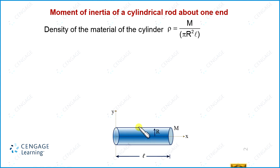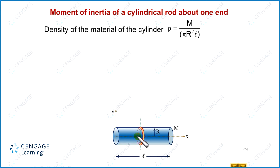Now we will select one elemental disc. We can consider this cylinder as made of a number of discs placed coaxial with the x-axis. We select a disc at a distance x from the end. The thickness of this disc is equal to dx.